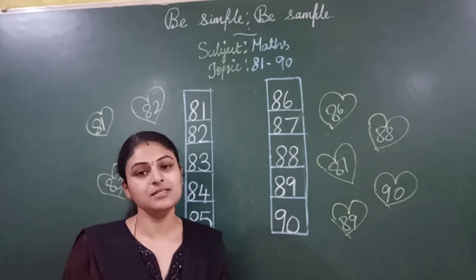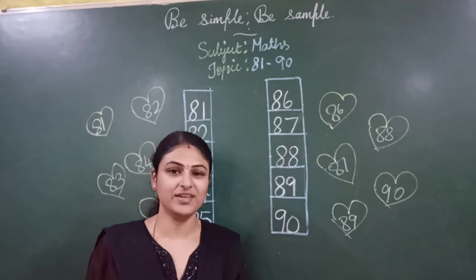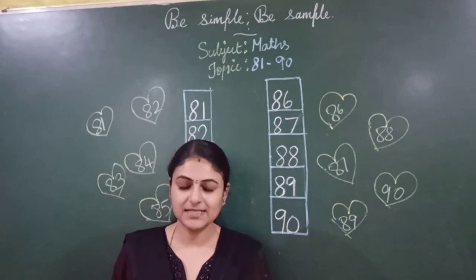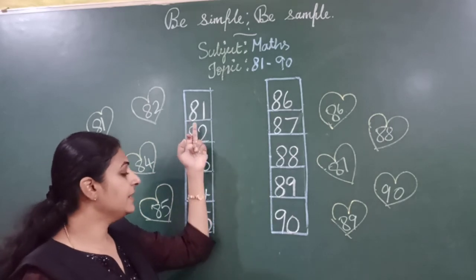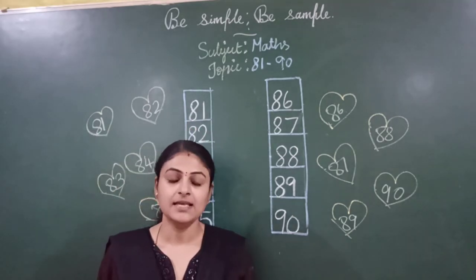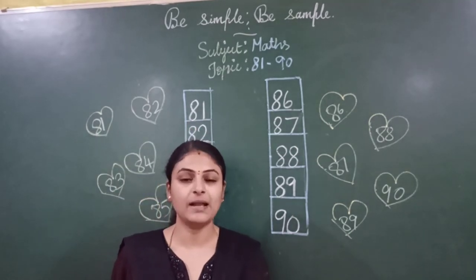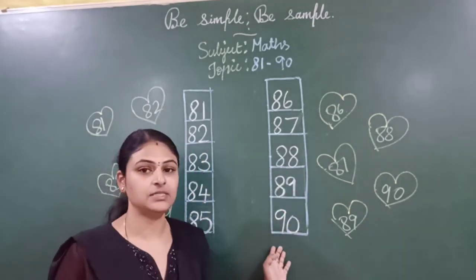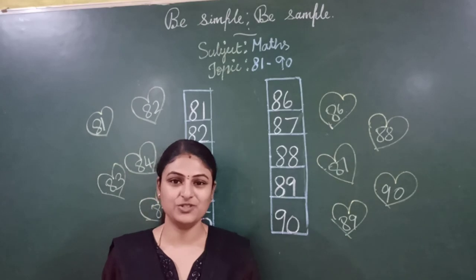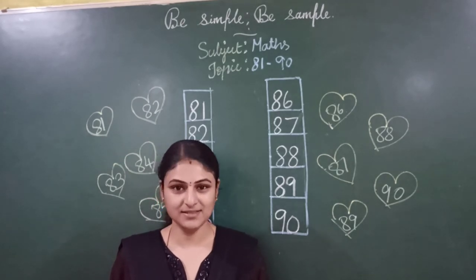Meanwhile, you can practice roughly in some other book. Okay children? Parents, please guide your child. Help your child to learn how to write 81 to 90. Simultaneously, you can practice with them to write number 1 to 90. Okay? I hope you understood children. Thank you parents. Thank you children.